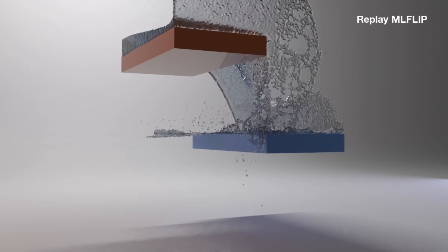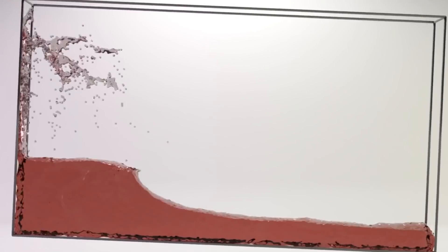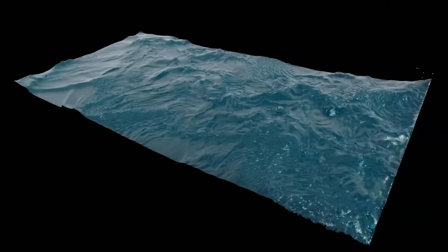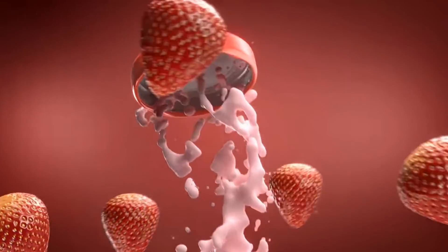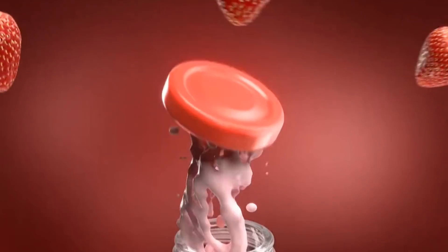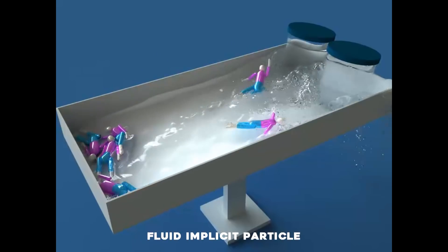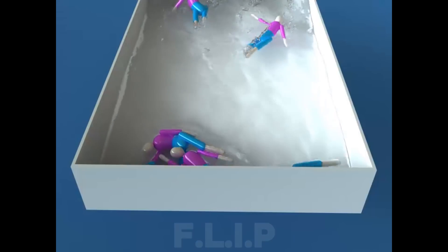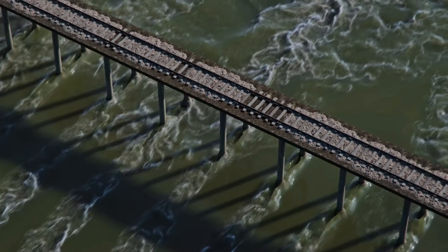Liquids present a unique set of challenges. Since they take the shape of their container, they're quite literally fluid and almost always in motion. There's the different parameters you need to account for — a glass of milk doesn't move the same way as a half-melted milkshake. The fluid implicit particle, known as FLIP to friends and lovers, is a numerical technique used to simulate the behavior of liquids. Here's but a taste of its mighty power.